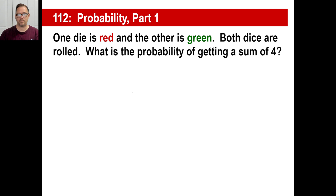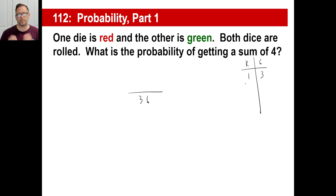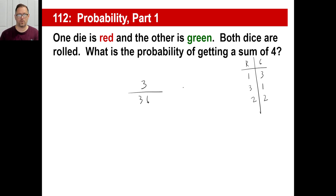We already know that if we roll two dice there are 36 possible outcomes. Now, what are the chances of rolling a sum of four? If the red die is one, the green could be three. If the red die is three, the green could be one. Or there's one more: two and two. Those are the three chances out of 36 that you could get a sum of four. Reduce that fraction and it's one over 12.